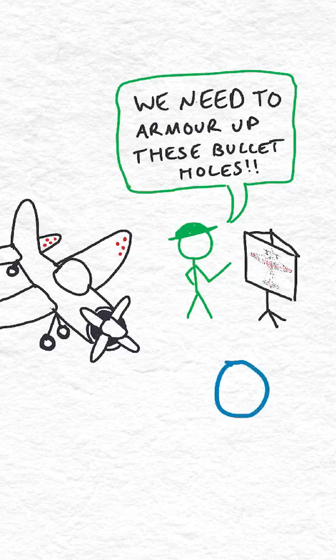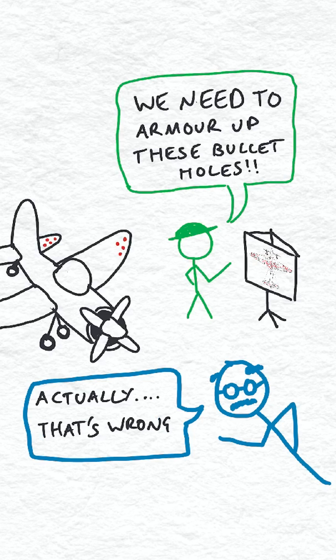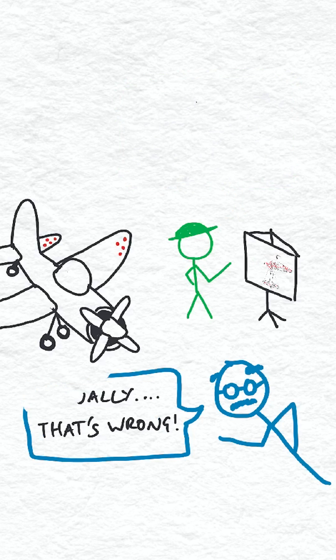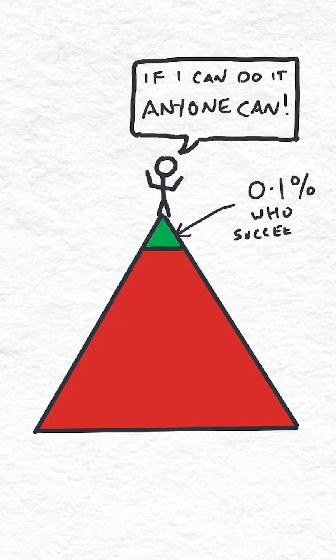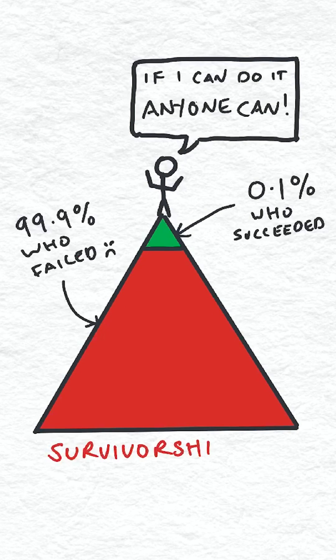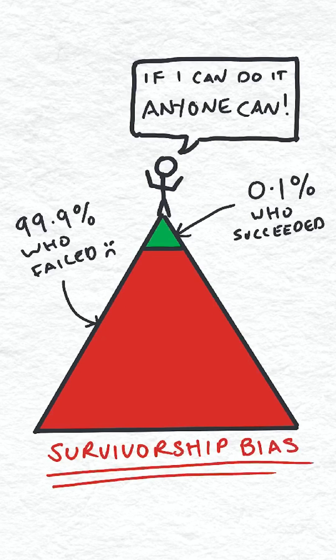A statistician realized that this data actually represents where the planes can get shot and still return. It's a great example of survivorship bias. The logical error of concentrating on things that pass the selection process while overlooking those that did not.